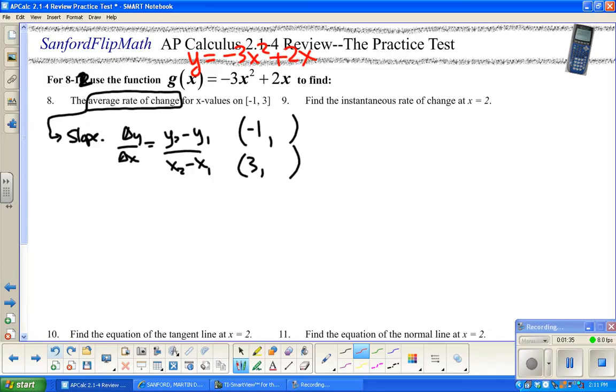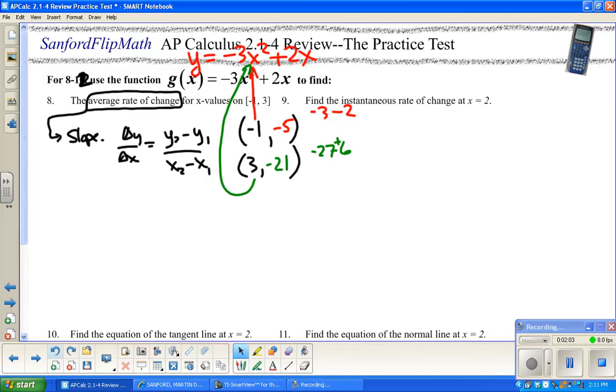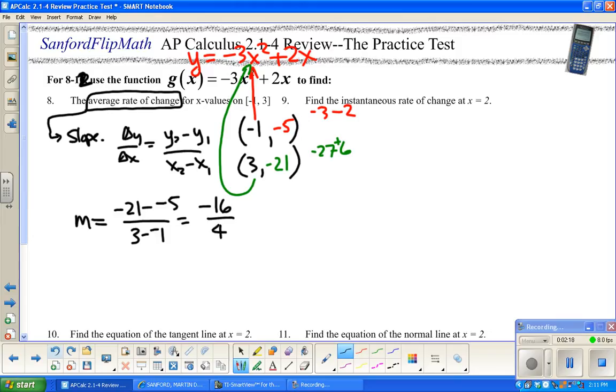So I'm going to substitute negative 1 in there. So negative 1 squared is 1 times 3 is negative 3. 2 times negative 1 will be minus 2, so this will be negative 5. Same idea then for the 3. We'll put the 3 in there, so negative 27 and 6, so this is negative 21. And then we're just going to find slope.